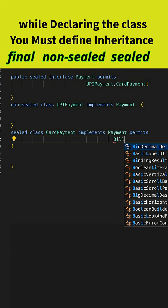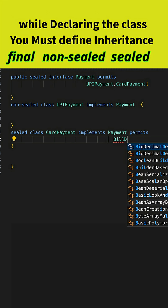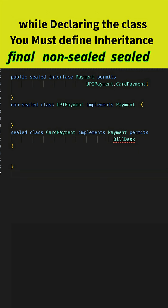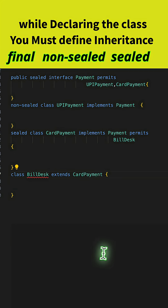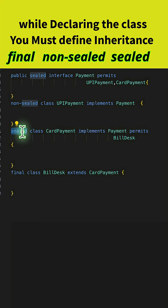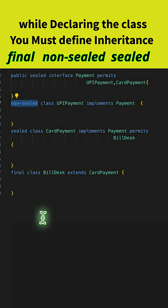For example, you can have a class called BillDesk which can extend Card Payment, and you can again mark that class as final, sealed, or non-sealed. These are the three allowed keywords for classes implementing a sealed interface.